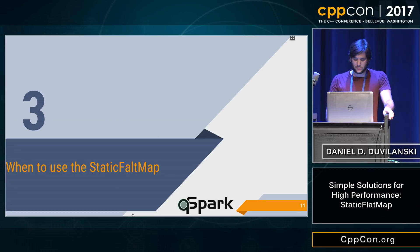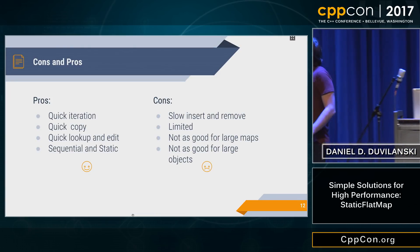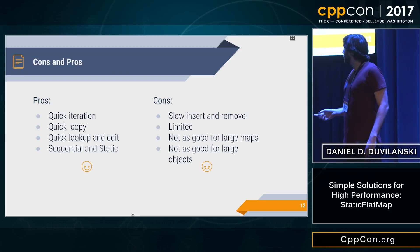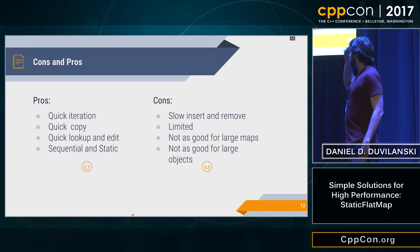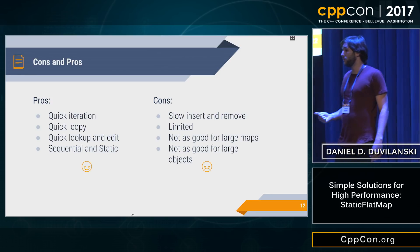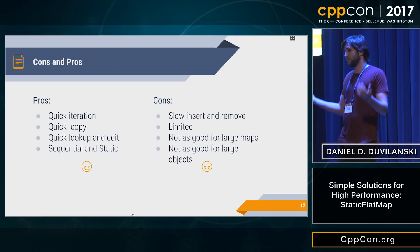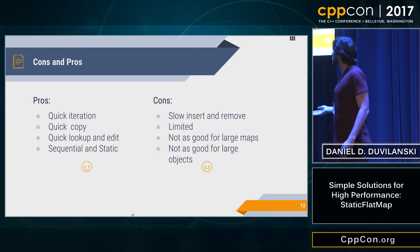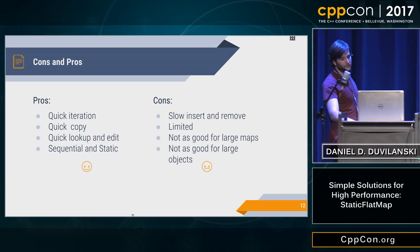When should you use it? Let's look at the pros and cons. We have quick iteration, quick copy, quick lookup and edit. The binary search is O(log n), which is the same as std::map. It's sequential and static, giving us all the performance boost we wanted. The cons: very slow insert and very slow removes, because you need to reorganize the map every time. It's limited in size — you need to know the size in advance, because it's static. Not as good for large maps or large objects, because reordering will be expensive the larger it is.